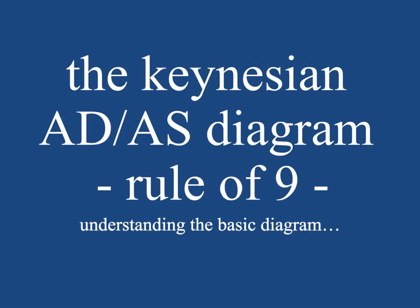I invented this way of remembering how many components you need to have on the Keynesian aggregate demand aggregate supply diagram, and there are nine. So this is the rule of nine for the Keynesian AD/AS diagram, and this is the third in a progression of these videos that I've done.